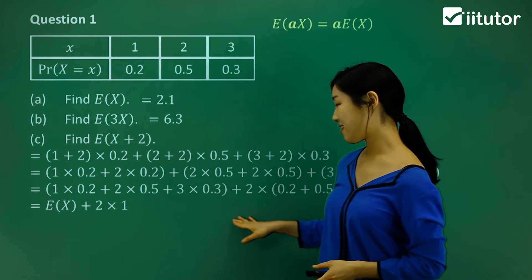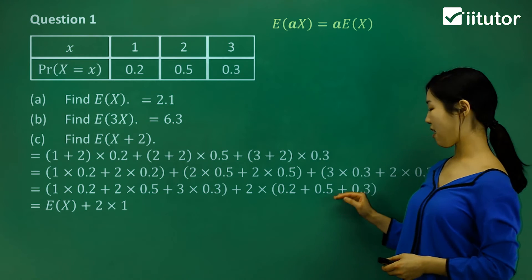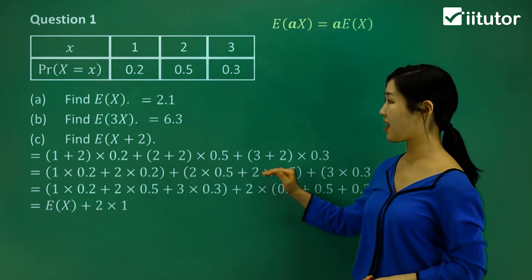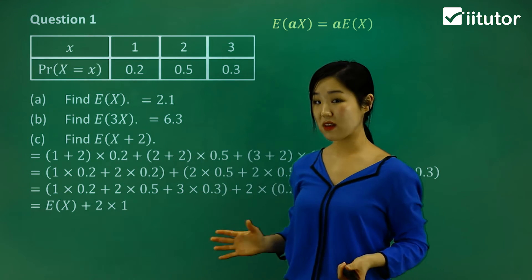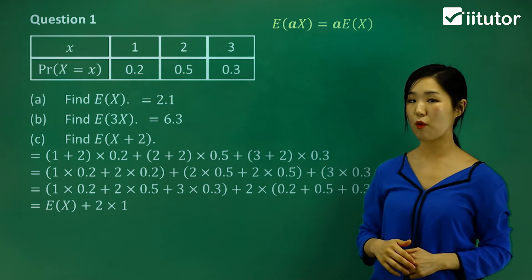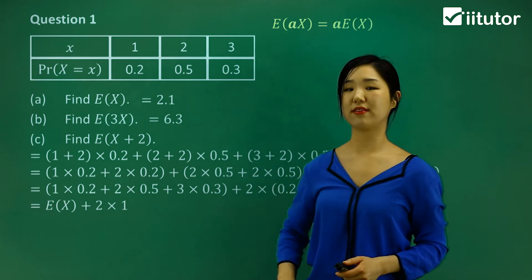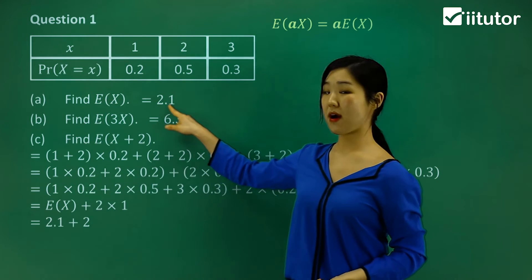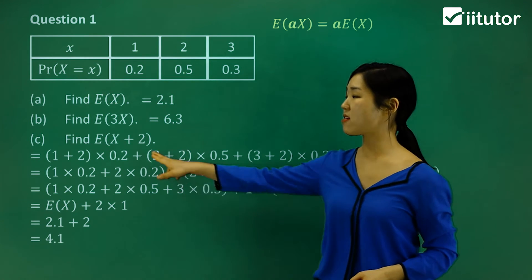Then plus 2 times the sum of 0.2 plus 0.5 plus 0.3, which simply equals 1. Those are our probabilities, and they must add to 1 — that's one of our rules for discrete probability distributions. So 2 times 1 is just 2. The expected value of x from part A was 2.1, so 2.1 plus 2 gives us 4.1. That is our expected value of x plus 2.